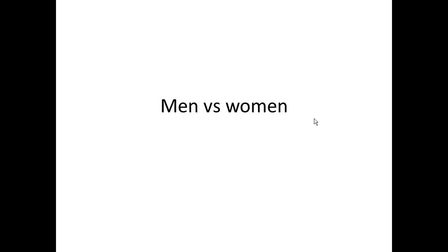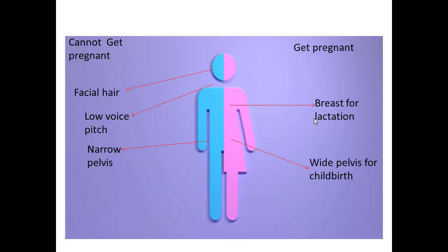Now back to the driving question: what makes us biologically male or female? Now that we have learned more about fertilization and sex cells, we are going to look at the main biological differences between a female and a male. Females can get pregnant, have breasts for lactation, and have a wide pelvis for childbirth. Males cannot get pregnant, tend to have facial hair, and have a lower voice pitch.